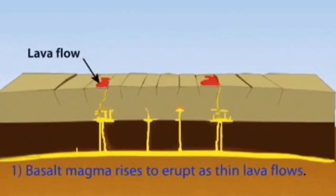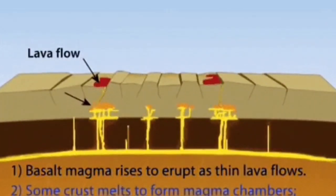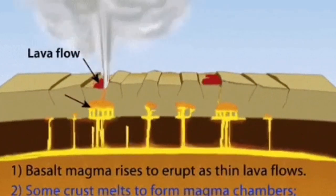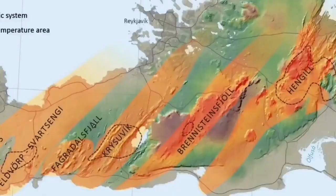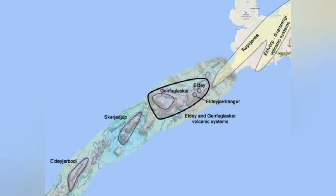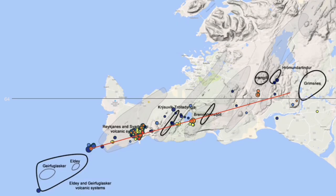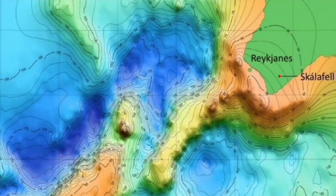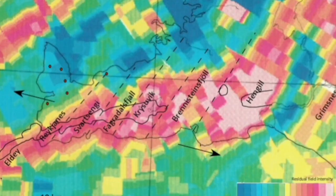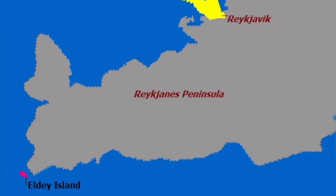In the Red Sea we have another example, the Afar Triangle in Africa, and the Rhine Valley in Germany. We have these eruptions in the water most of the time, like what we have in the Reykjanes Ridge, which is a plateau inside the Atlantic Ocean. Part of it reaches the land, and those systems are practically the same as the volcanic systems we have on land. One of them is the LD volcanic system, similar to the Svartsengi or Fagradalsfjall volcanic system or Hengill.